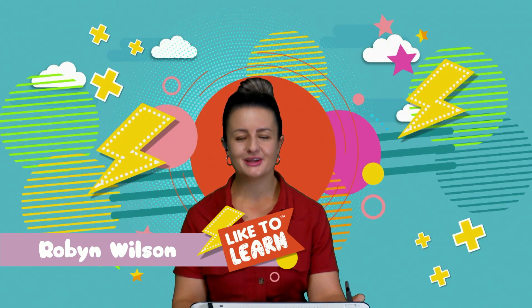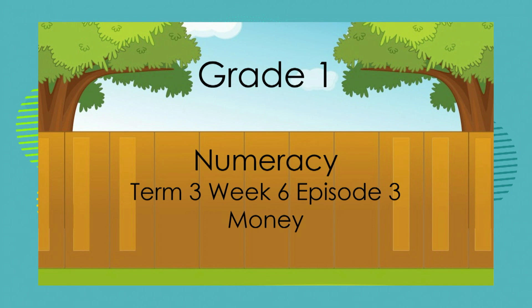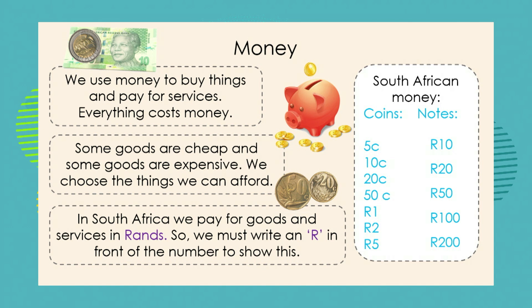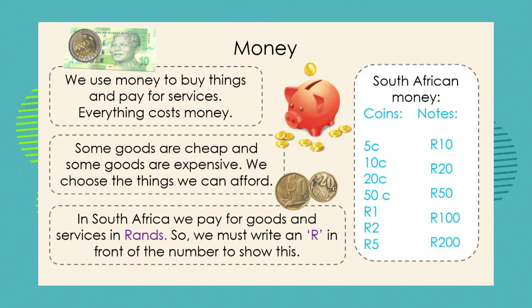Hello Grade Ones, thank you for joining me today. My name is Robin and today in numeracy we are going to learn all about money. Money is made up of notes and coins. We use money to buy things and pay for services. Everything costs money — some goods are cheap and some goods are expensive. We choose the things we can afford. In South Africa we pay for goods and services in rands, so we must write an R in front of the number to show this.